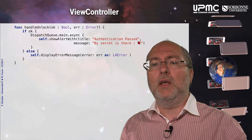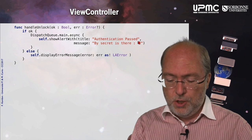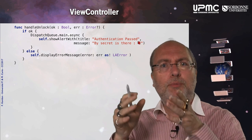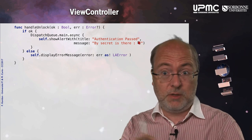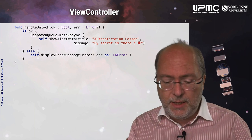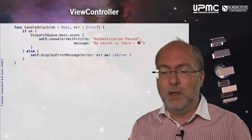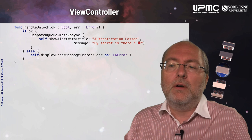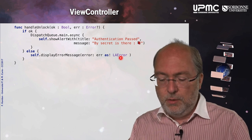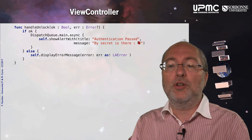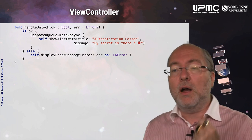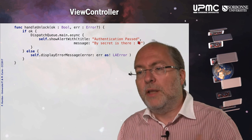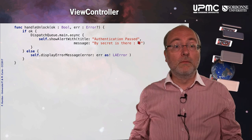And you have the handleUnlock method, with a boolean and an error. It's the prototype you must respect — it could also have been provided with a block, as usual with handlers. According to the ok parameter, either you display the secret or you display an error message, providing the information at this stage to explain what occurred and why the authentication did fail.